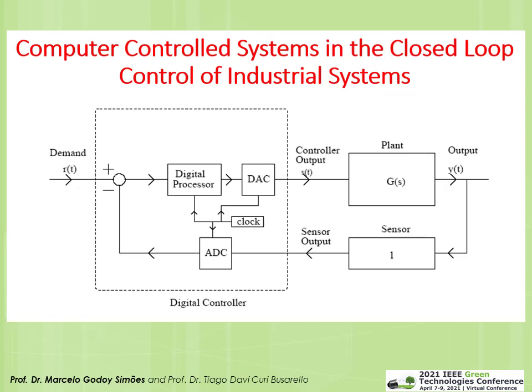Here we see a typical example of a closed-loop control of an industrial system. We have a setpoint shown as 'demand,' which is compared with the feedback signal. The setpoint minus the feedback gives an error that goes through a regulator. This is a digital controller — a digital processor incorporates all calculations. For example, in module two you had an example of a PID in digital format.